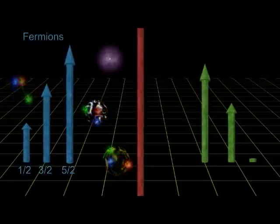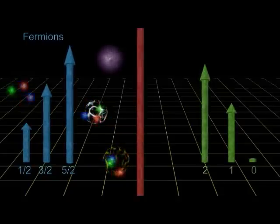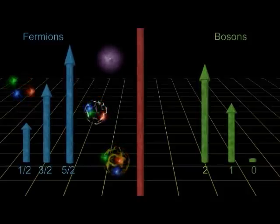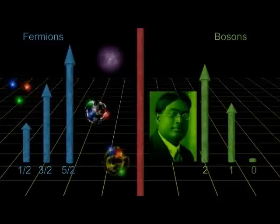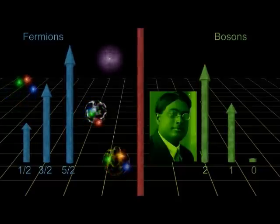The other family of particles have spin equal to zero, one, two, three, and so on. They are called bosons, after Satyendra Bose, who along with Einstein, developed the statistics for dealing with this family.